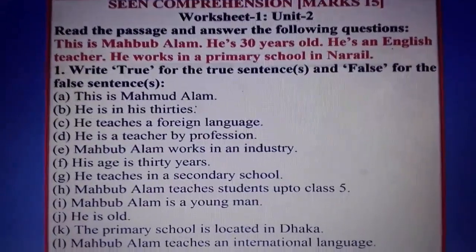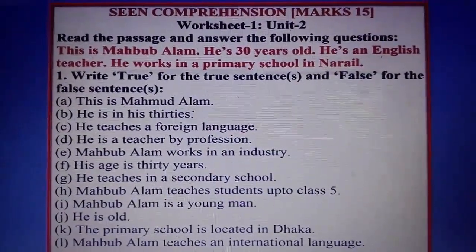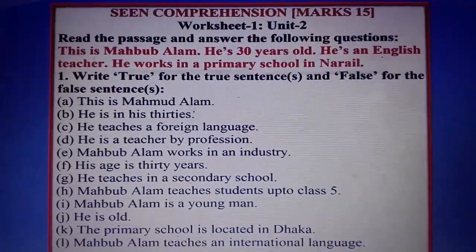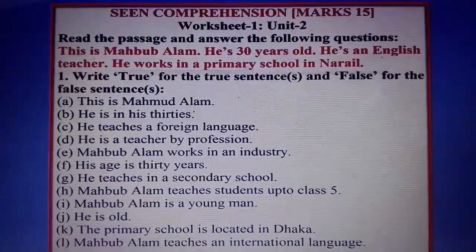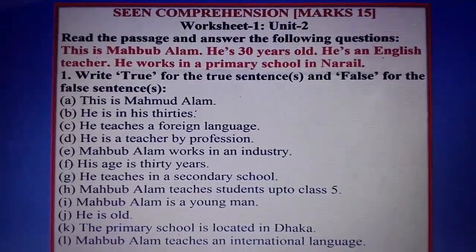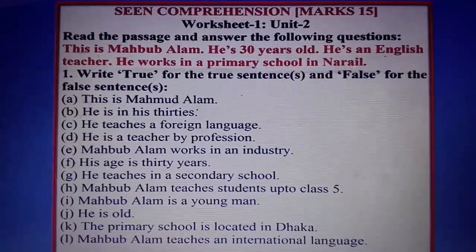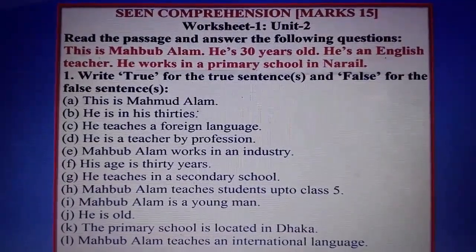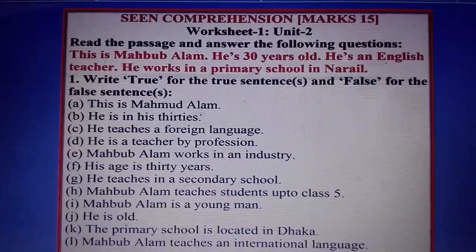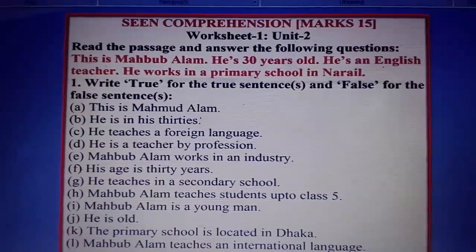This is Mahabubalam. He is 30 years old. He is an English teacher and he works in a primary school in Noral. That means the name of the teacher is Mahabubalam, he is 30 years old — that means he is young. He teaches a foreign language, that means English. He teaches English to the students of a primary school, that means up to Class 5, and his school is located in Noral.